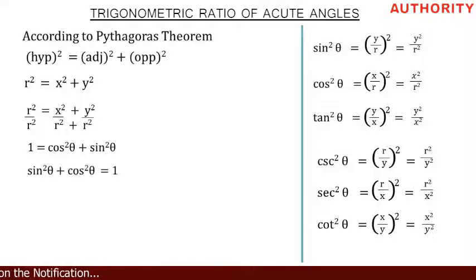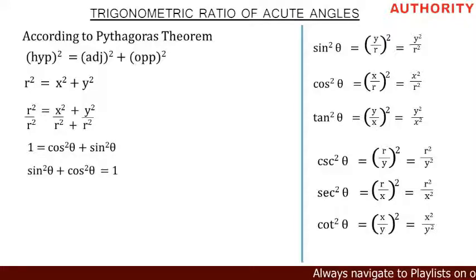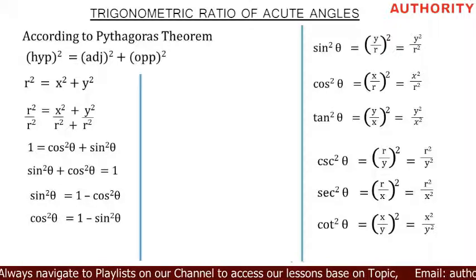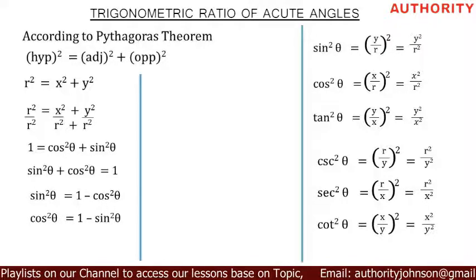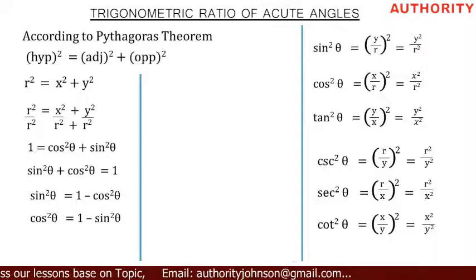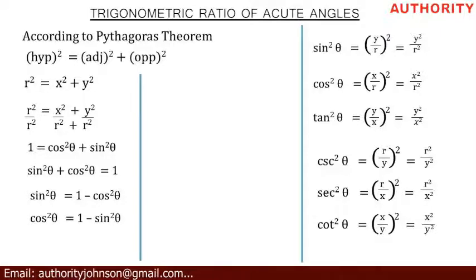Since y² over r² is sin squared theta, we can say sin squared theta plus cos squared theta equals 1. From this, we can make sin squared theta the subject: sin squared theta equals 1 minus cos squared theta. Similarly, cos squared theta equals 1 minus sin squared theta.